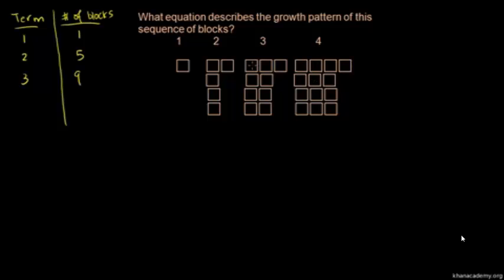On the fourth term, same thing — the third term plus another column of four blocks added. So we added four more, giving us 13 blocks. Our fourth term is 13. So let's see if we can come up with a formula, either looking at the graphics or the numbers themselves.